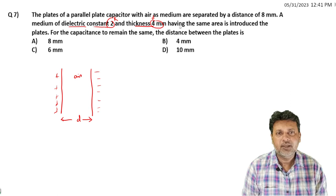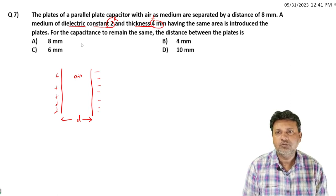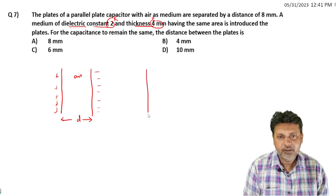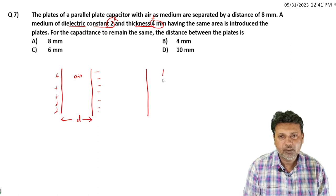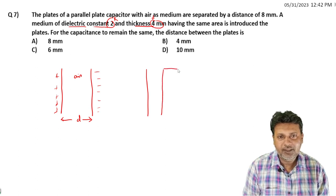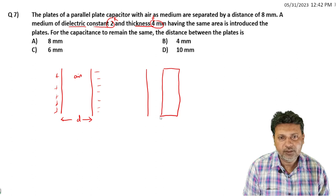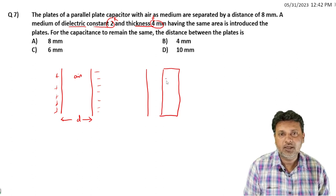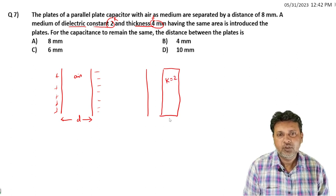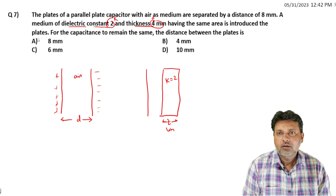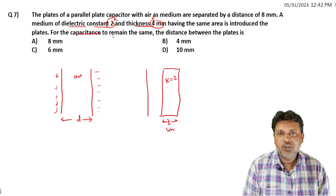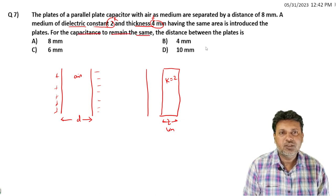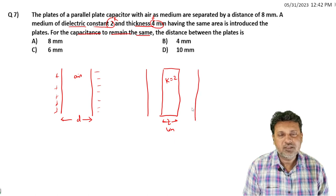Having the same area, introduced between the plates - a dielectric plate is introduced with thickness T which is 4 millimeters. So the capacitance remains the same, the distance between the plates...